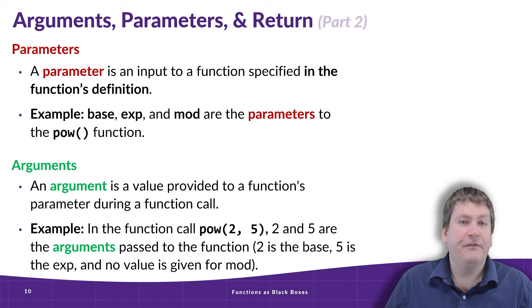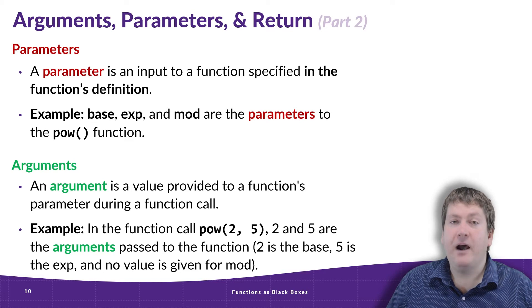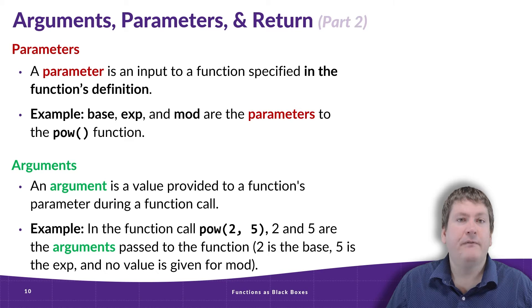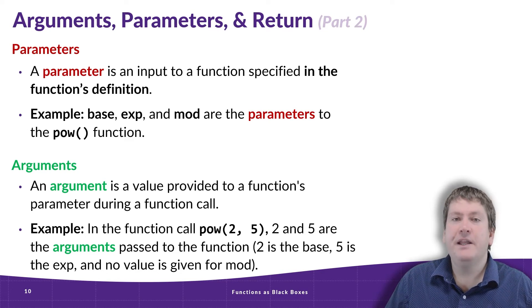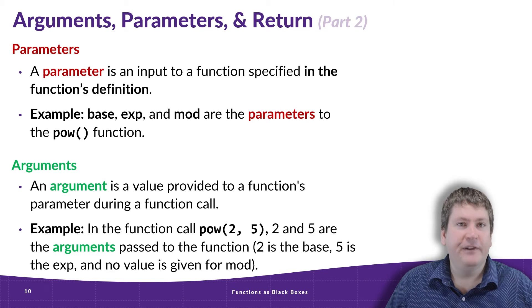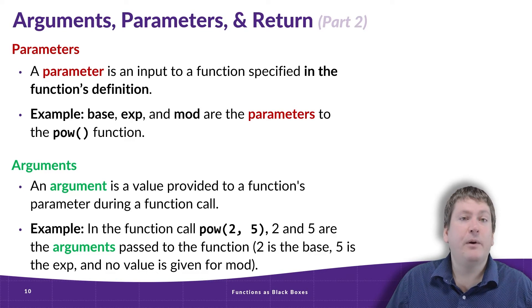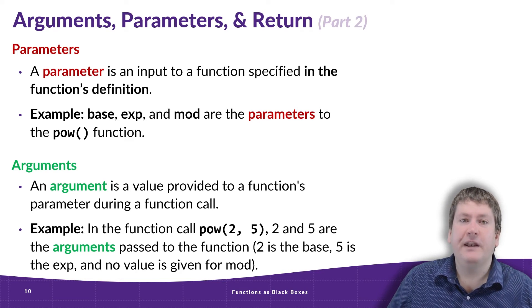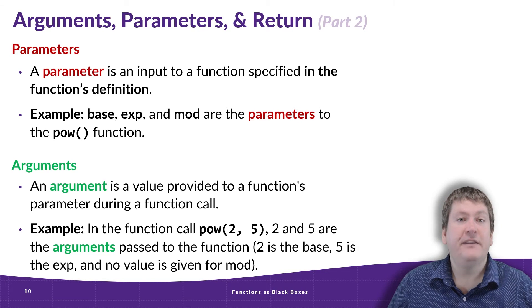Now another similar concept is arguments. An argument is the actual value we provide to a function's parameter during a function call. As an example, if we were to call the pow function with the values 2 and 5, 2 would be the argument for the base parameter, and 5 would be the argument for the exp parameter. The mod parameter would just get a default value because we didn't provide it here, and it had that default set in the documentation. Now this is a fairly important distinction, especially when we start making our own functions in another video. One way that you can remember is that argument starts with an A, and actual starts with an A, and arguments are the actual values that we pass to parameters.